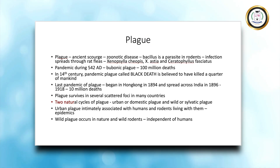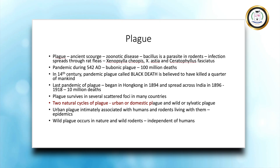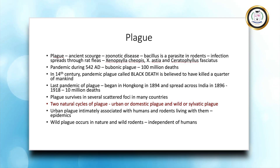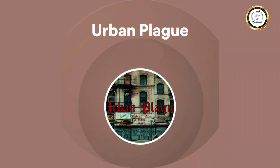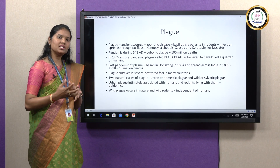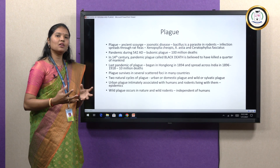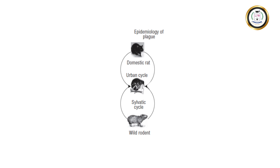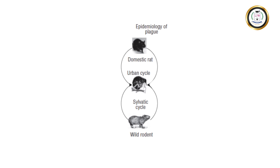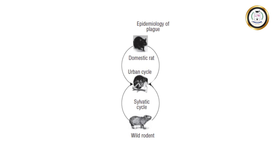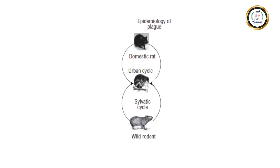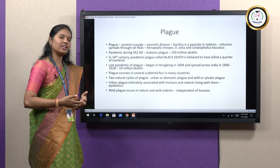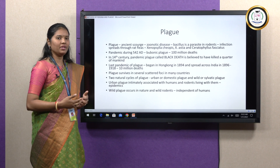There are two natural cycles of plague. One is the urban or domestic plague, which infects humans as well as the rodents who live among them. The other is the wild or sylvatic plague, which affects only wild rodents and is completely independent of human beings — it does not affect humans at all.